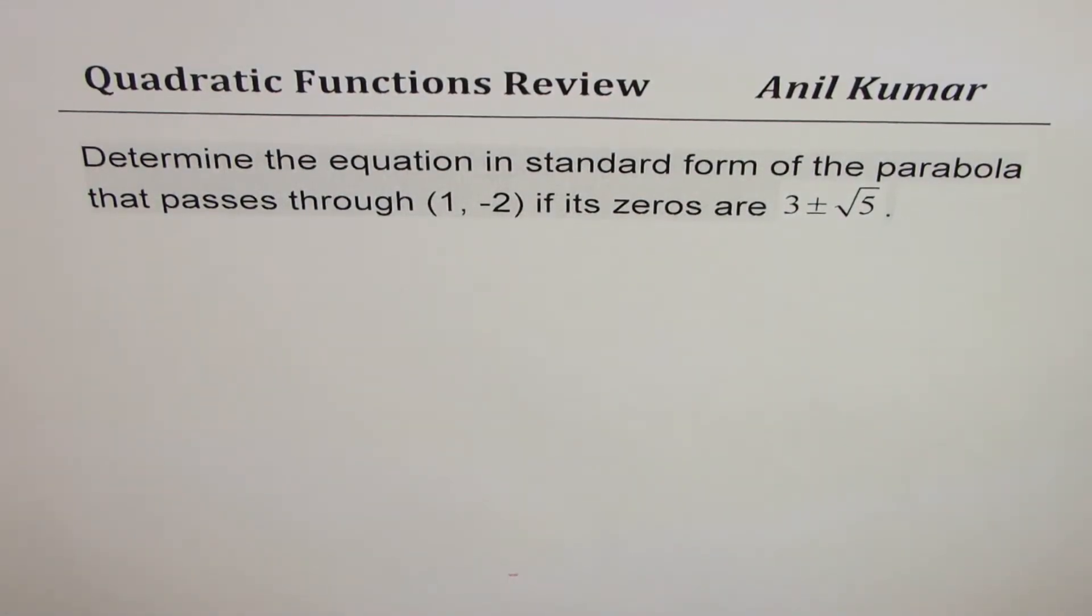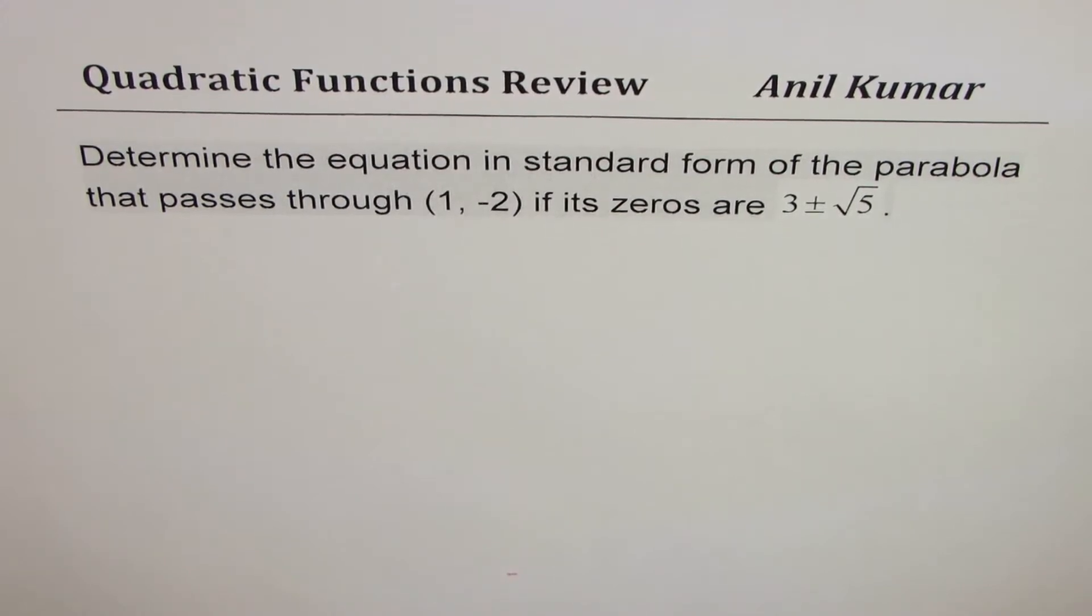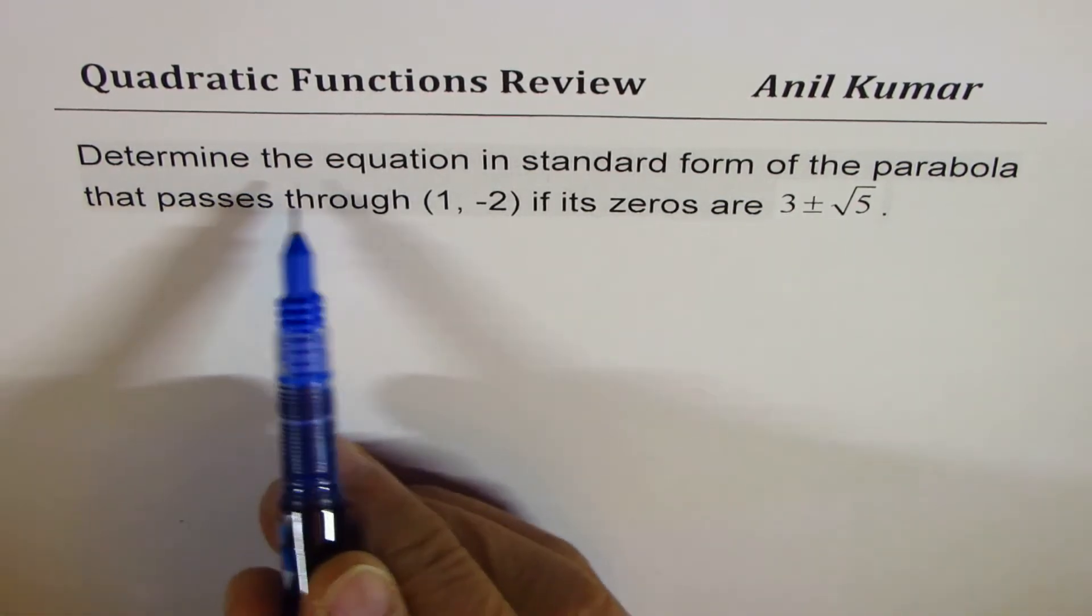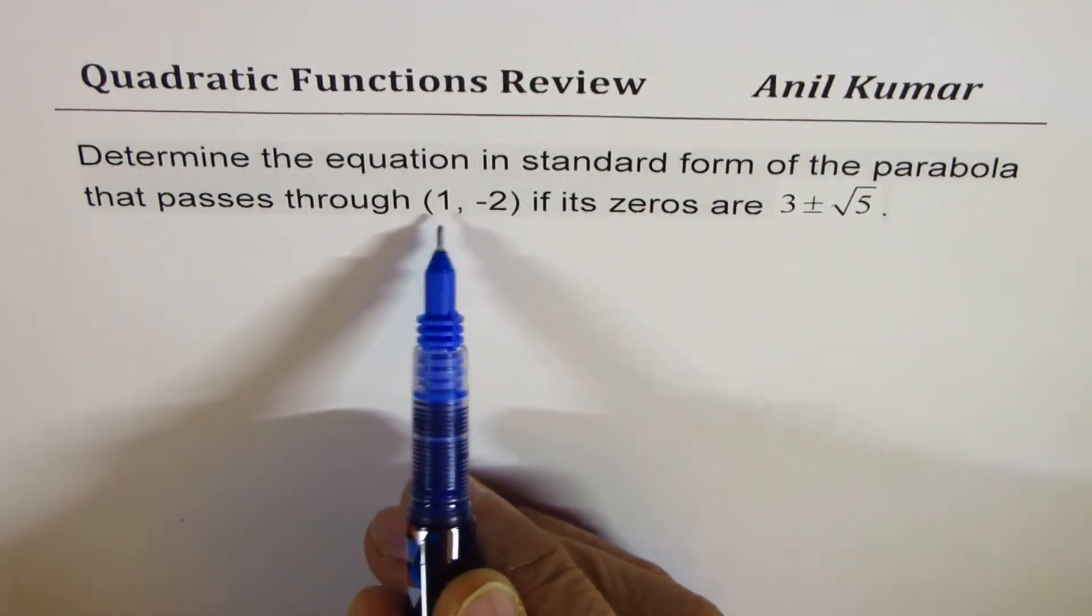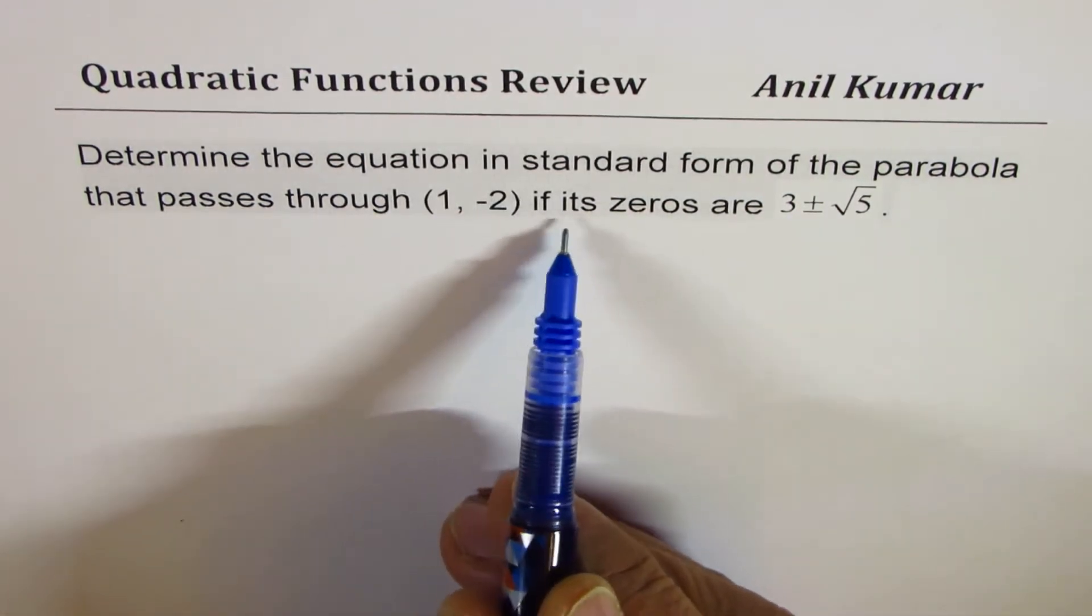I'm Anil Kumar sharing with you the solution of a question from my student Gourmeen. It is based on quadratic equations. The question is: determine the equation in standard form of the parabola that passes through (1, -2) if its zeros are 3 ± √5.